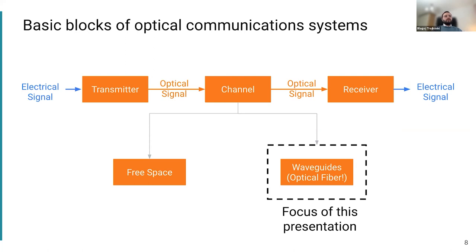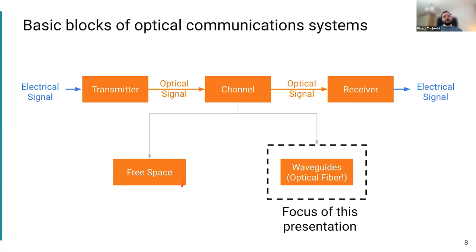If we imagine the path of the signal from the electrical to the optical domain and then back to electrical, we see a middle section consisting of the simple logical blocks of transmitter, channel, and receiver. In optical communications, the channel is the medium where light travels. It can be free space or a wave-guided medium like optical fibers, which is the focus of this presentation. Brief examples of free-space use include satellite communications or short-reach indoor communication systems.